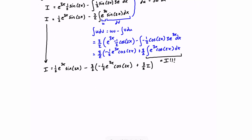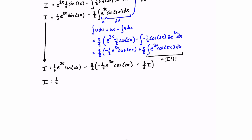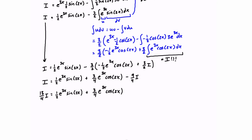The first term stays: 1/2 e to the 3x sine of 2x. Distributing the negative 3/2, we get plus 3/4 e to the 3x cos of 2x, and then minus 9/4 times I. Now we add 9/4 I to both sides — we have 4/4 I on the left, so 4/4 I plus 9/4 I gives us 13/4 I. Then we multiply both sides by 4 and divide by 13, so I equals 4/13 times everything on the right-hand side.